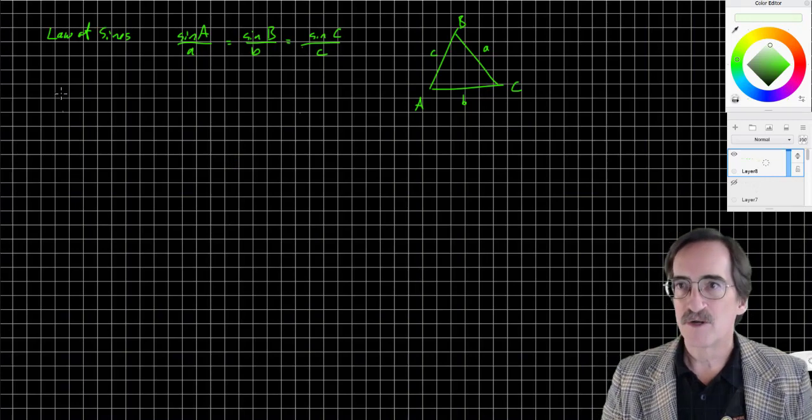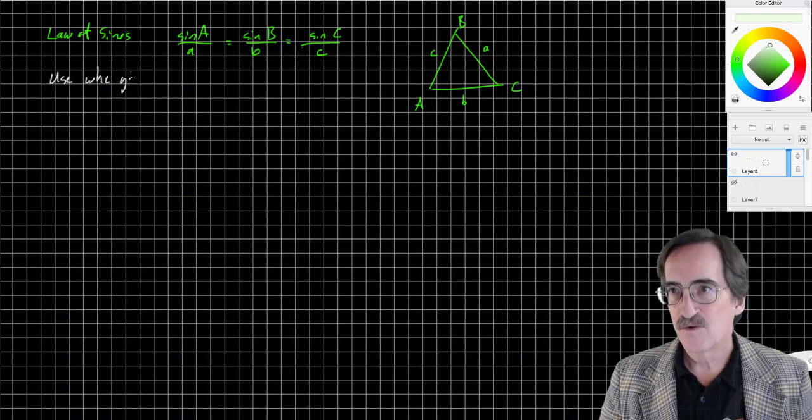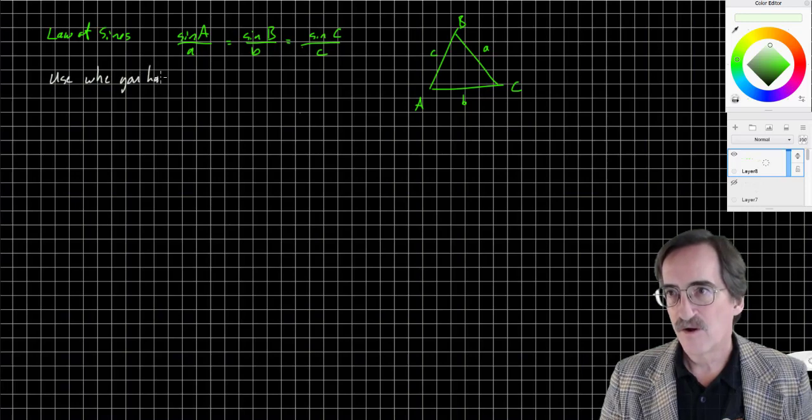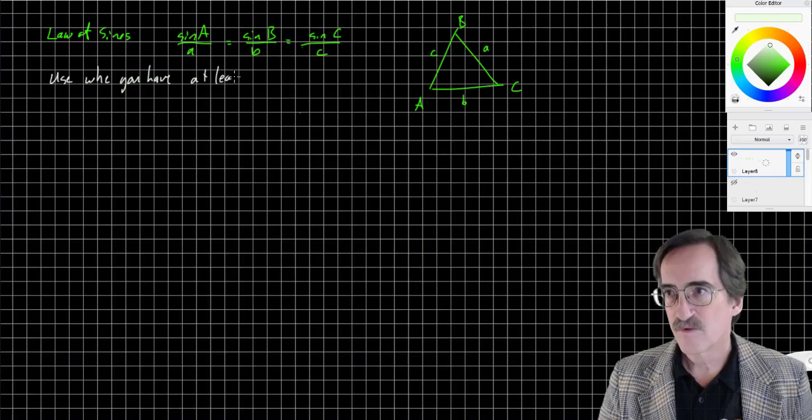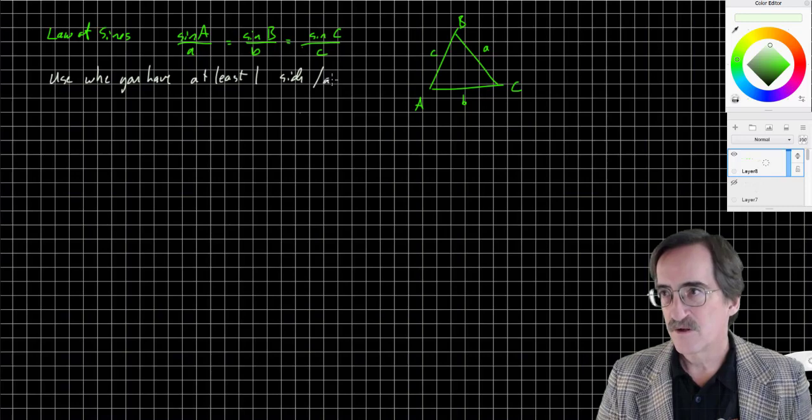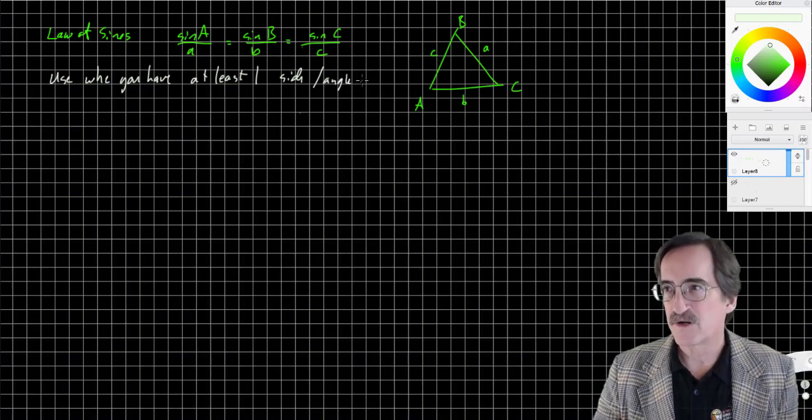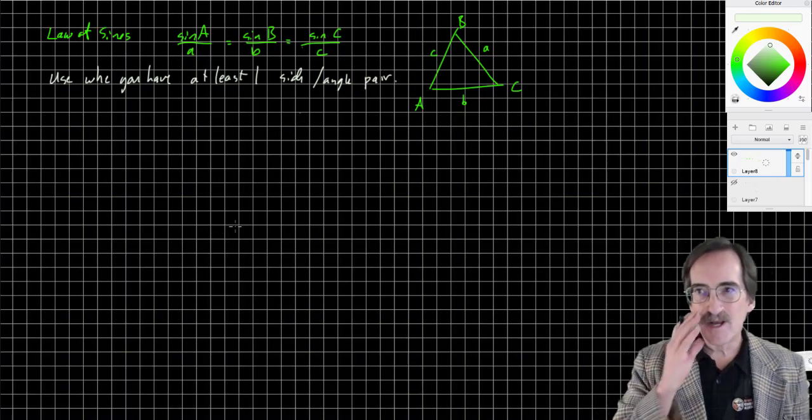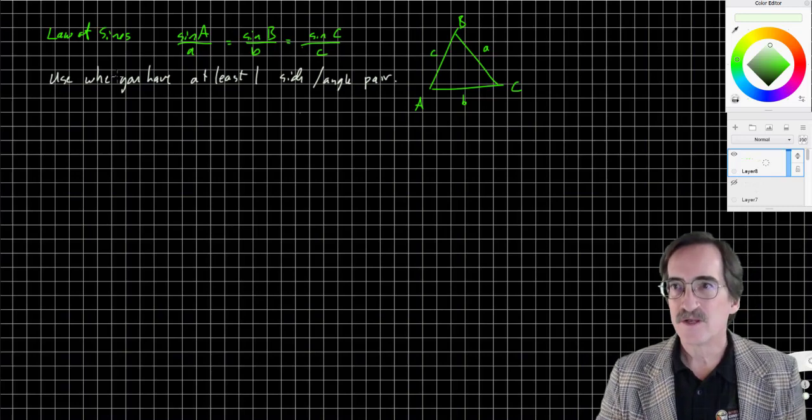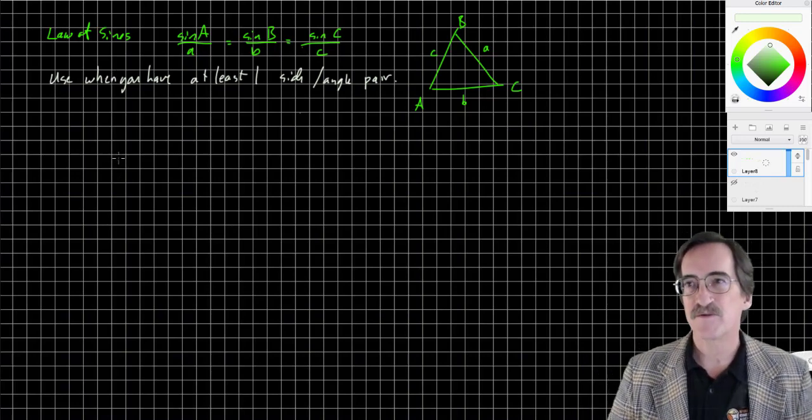This is my own note: use the Law of Sines when you have at least one side angle pair - a pair of A's, a pair of B's, or a pair of C's. If you have a side angle pair, then you can use the Law of Sines. That's kind of a test to determine if the Law of Sines works.